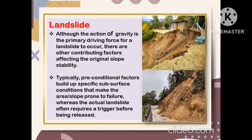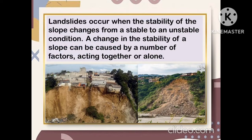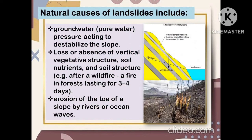Although the action of gravity is the primary driving force for a landslide to occur, there are other contributing factors affecting the original slope stability. Typically, pre-conditional factors build up specific subsurface conditions that make the area or slope prone to failure, whereas the actual landslide often requires a trigger before being released. Landslides occur when the stability of a slope changes from a stable to an unstable condition, which can be caused by a number of factors acting together or alone.